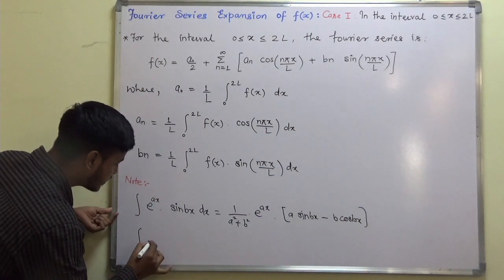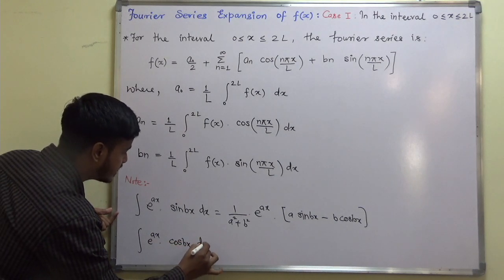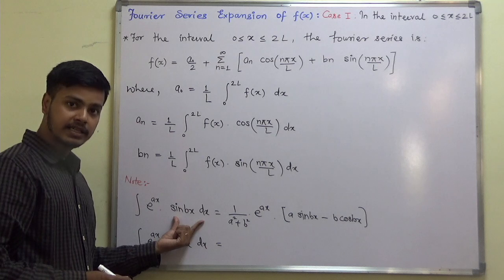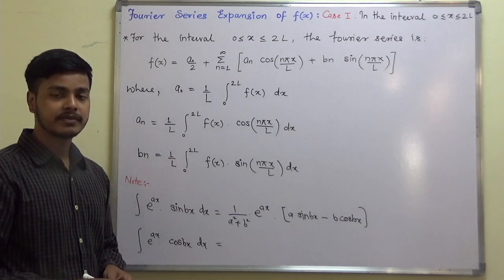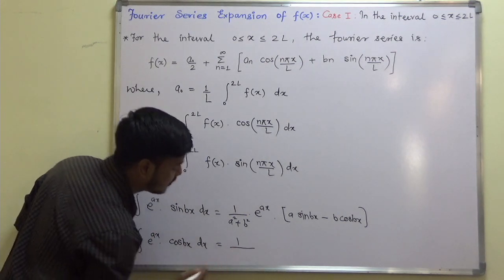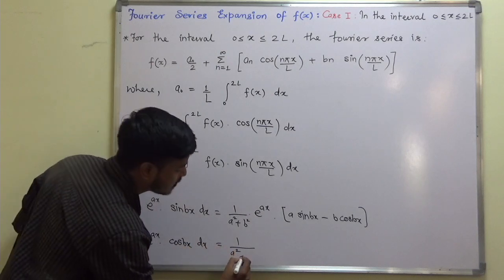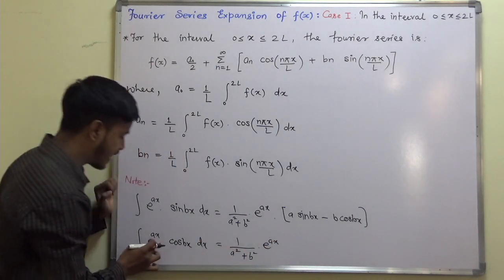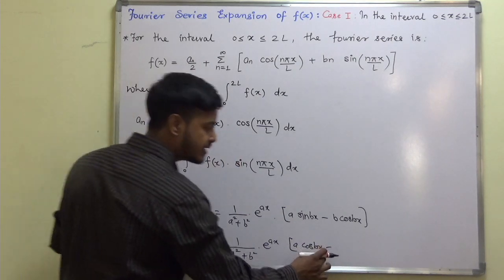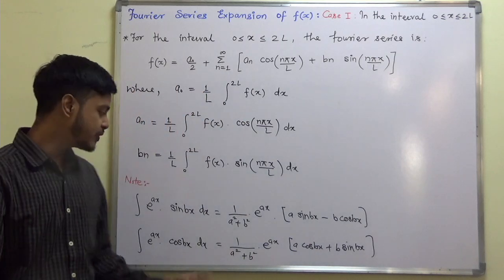Now I want you to write down the integration of e^(ax) · cos(bx) dx. You can pause the video for a few seconds and try to write down the formula. The answer is: 1/(a² + b²) · e^(ax) · (a·cos(bx) + b·sin(bx)). Here, since the derivative of cos is −sin, we get plus sin(bx)·b. We are going to make use of this formula.